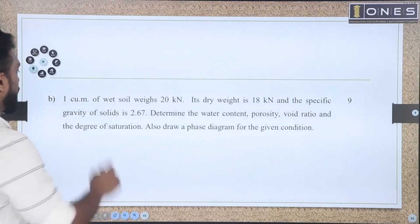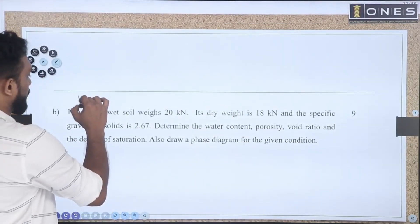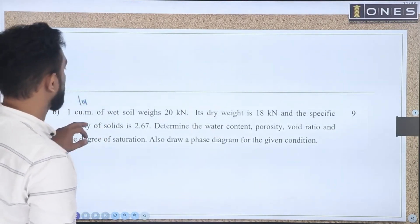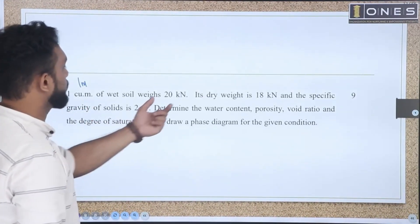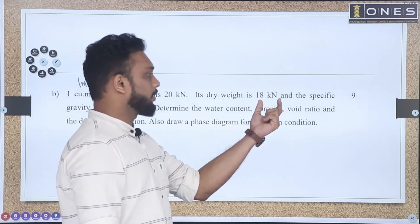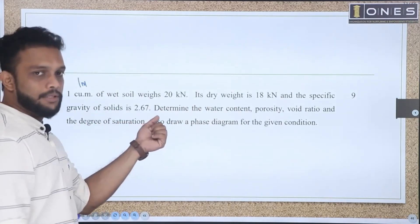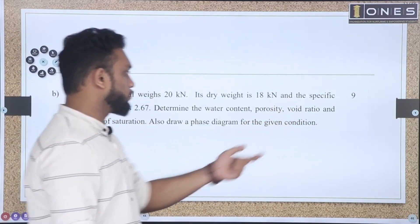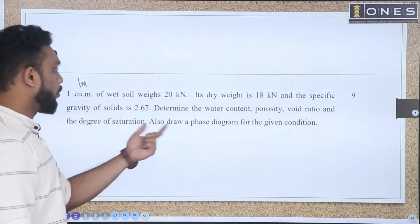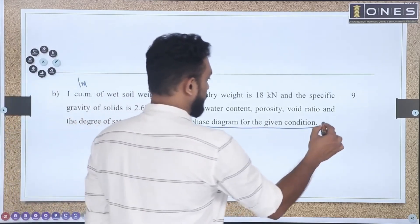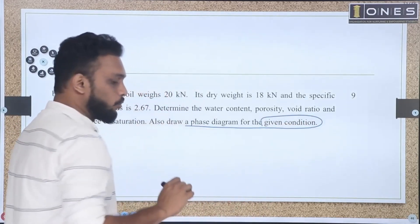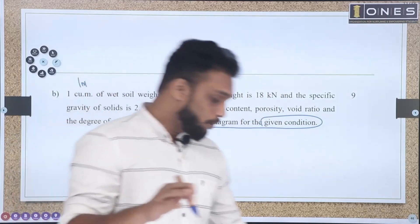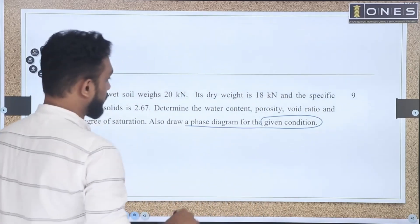1 cubic meter of wet soil: the wet weight is 20 kN, its dry weight is 18 kN, and the specific gravity of soil is 2.67. We need to find the water content, void ratio, porosity, degree of saturation, and also draw a phase diagram of the given condition. The phase diagram carries 3 marks.